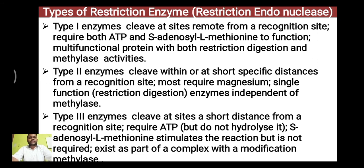There are different types of restriction endonucleases based on their action. Type 1 cleaves at a site remote from the recognition site — for example, if the recognition site is present between nucleotides 1 to 10, it will make a cut from either 100 to 1000 base pairs away. It requires both ATP and S-Adenosylmethionine as cofactors and is a multifunctional protein with both restriction digestion and methylase activity. Type 2 cuts either within the sequence or a short specific distance — for example, 10 or 20 base pairs from the recognition site. It requires Mg2+ divalent cations as a cofactor and is a single functional restrictive enzyme, independent of methylases. Type 3 cleaves at a shorter distance from the restriction sites, requires ATP but does not hydrolyze it, and also requires S-Adenosylmethionine which stimulates the reaction but does not take part in it.